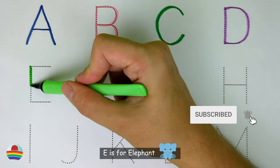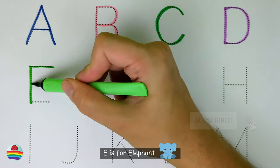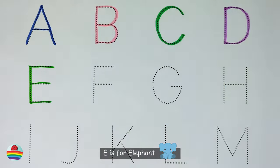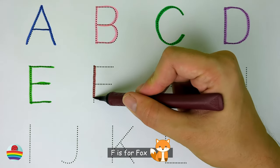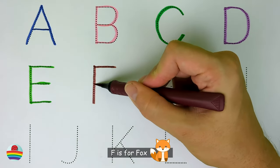E. E is for elephant. E. F. F is for fox. F.